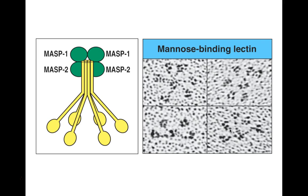Another close-up look at an illustration of MBL on the left and real transmission electron micrographs on the right, so you can just barely make out how this acute phase protein looks in a real example on the right, and how scientists and artists have interpreted that image on the left.